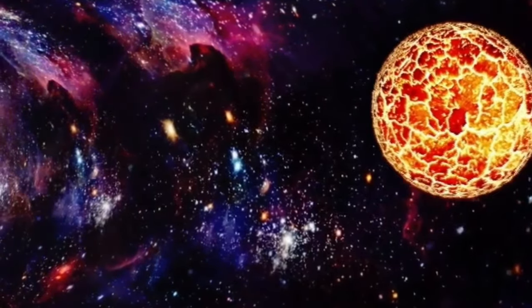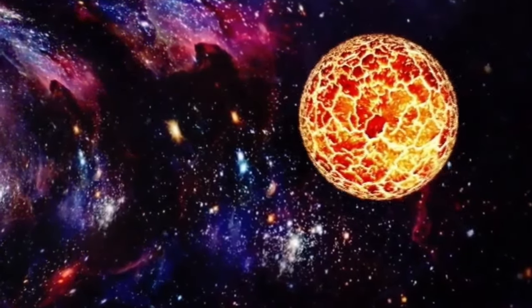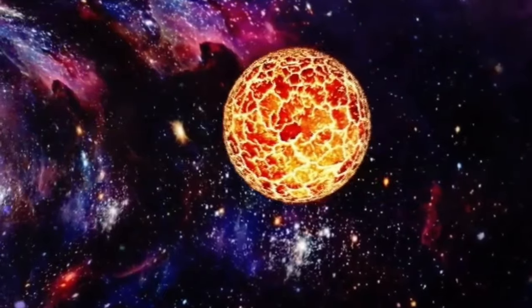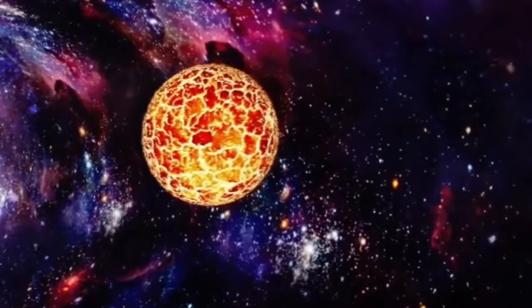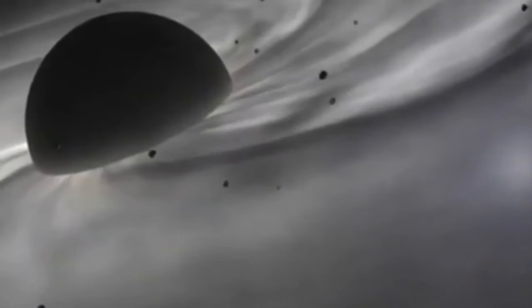At the center of a black hole, there exists a region we can't directly observe. Why is that? Black holes form when an enormous amount of mass is squeezed into an incredibly compact space, creating a gravitational force so powerful that even light cannot escape it. This is why we are unable to peer inside them.